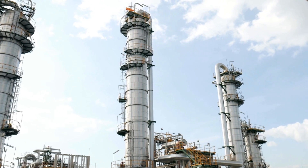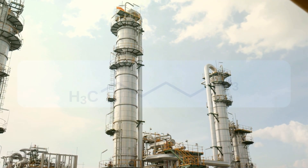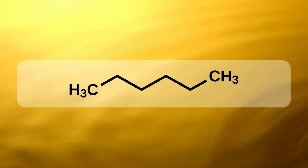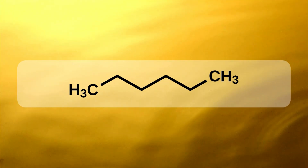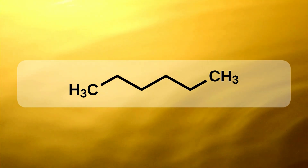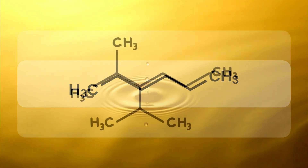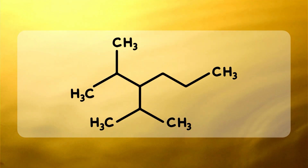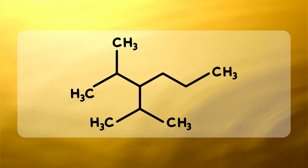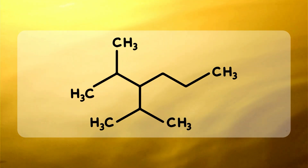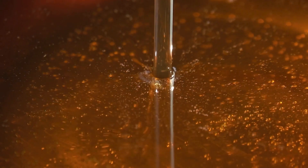Paraffinic oils are refined from crude oil rich in paraffins, meaning highly saturated or straight-chain hydrocarbons. This high saturation gives paraffinic oils better oxidation and thermal stability. Alternatively, naphthenic oils are refined from crude oil rich in naphthenes, which contain high levels of aromatics and low levels of wax.